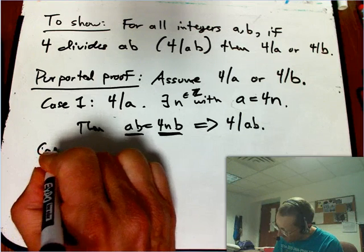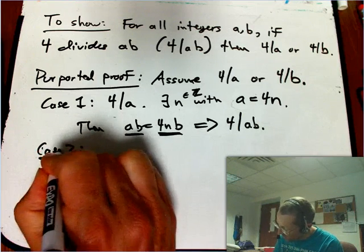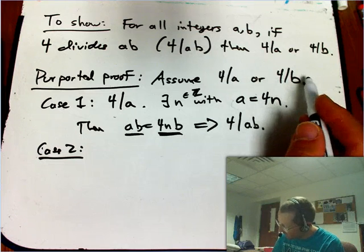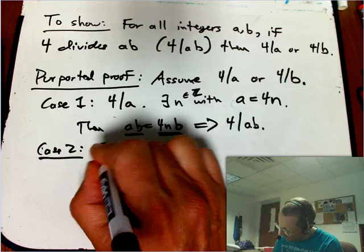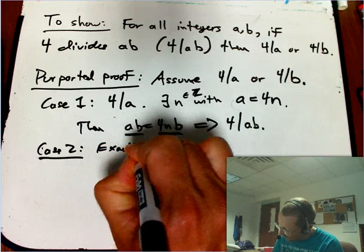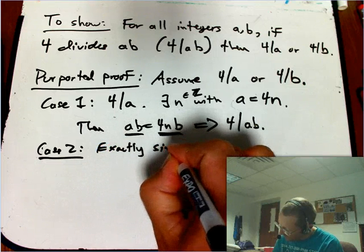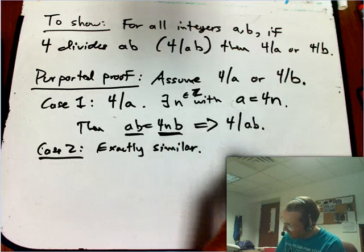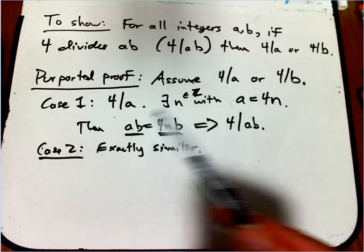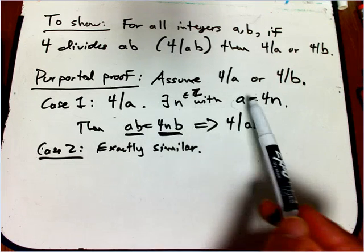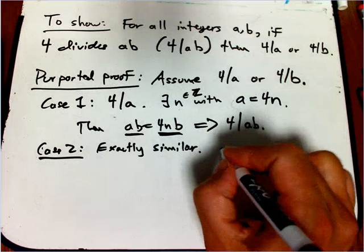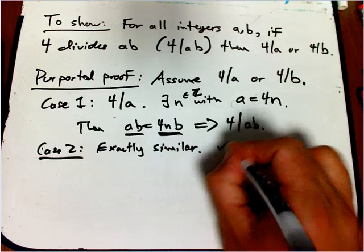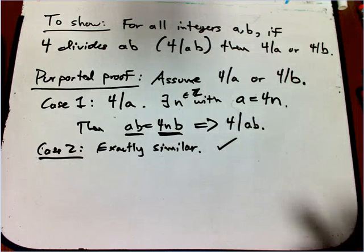Oh wait, what about case 2? We're not necessarily assuming that 4 definitely divides a, we might have the knowledge that it divides b. That's exactly similar. And it's so similar that really it's exactly the same thing with the a's switched to b's and the b's switched to a's. And so we'll say that's okay. All right, so what have we really proved?